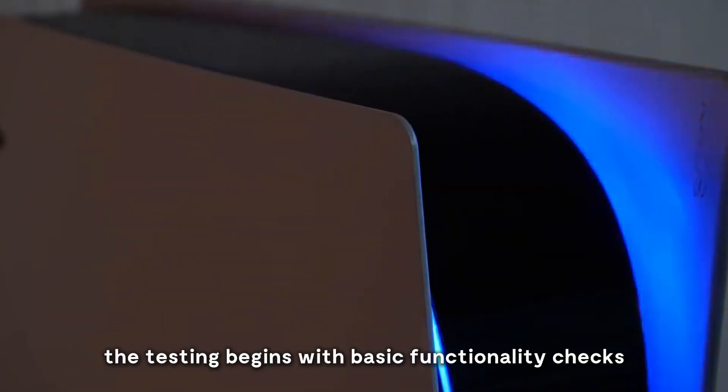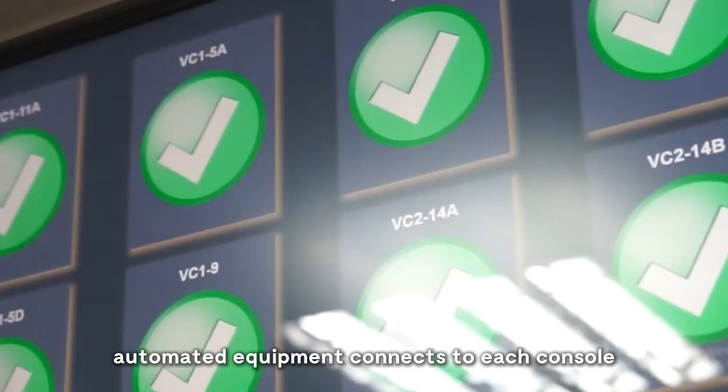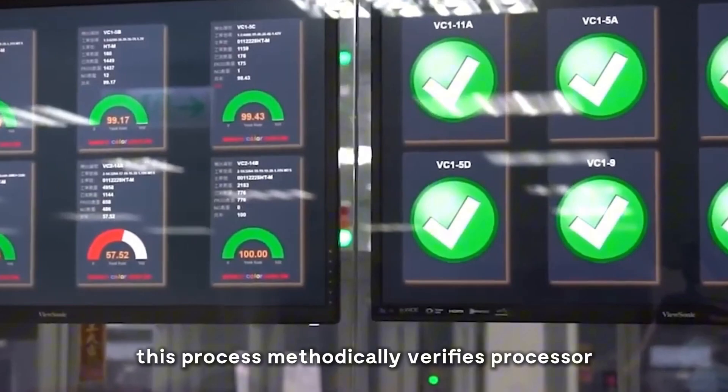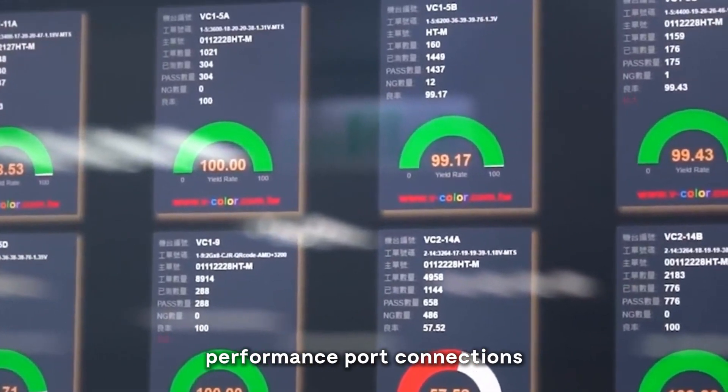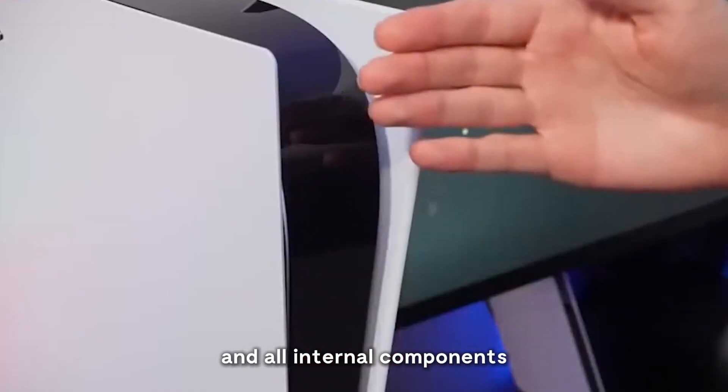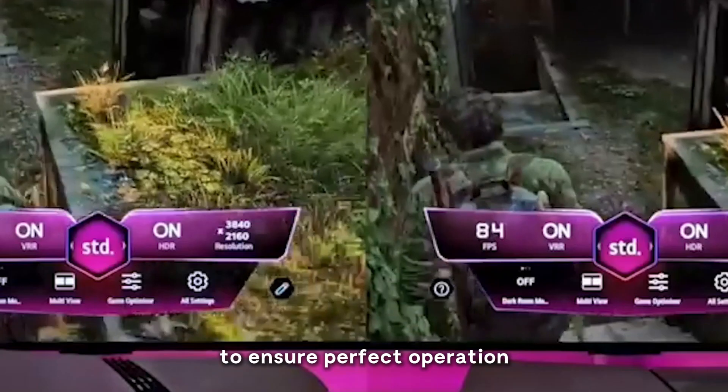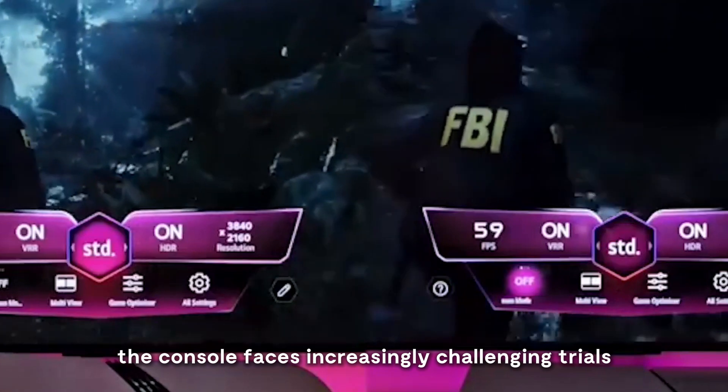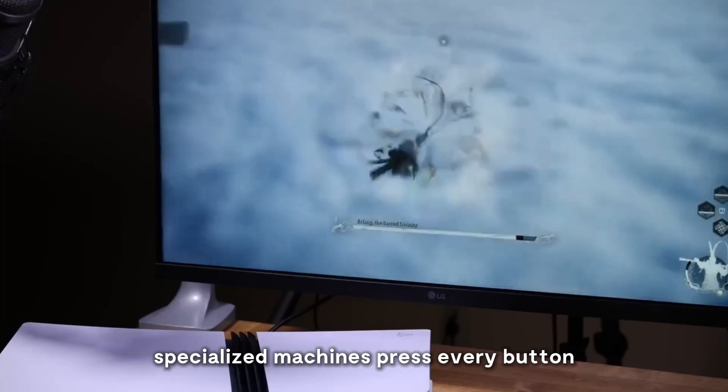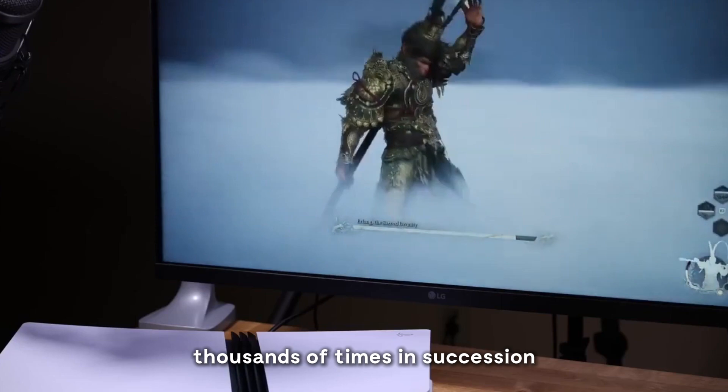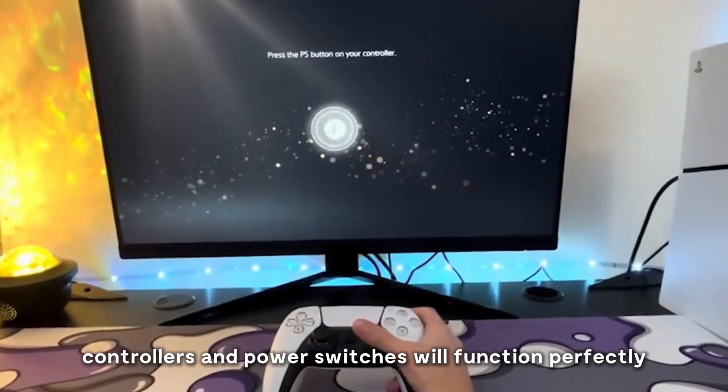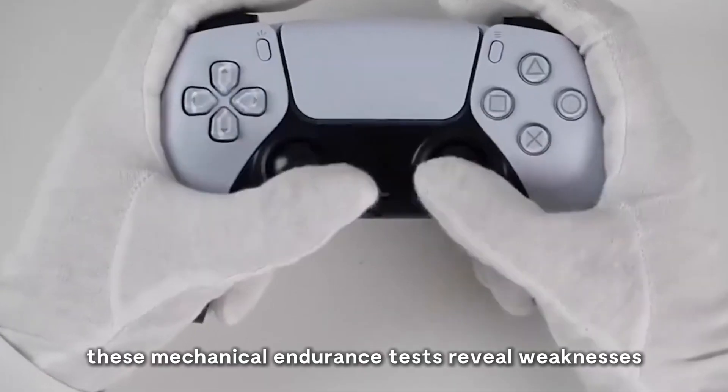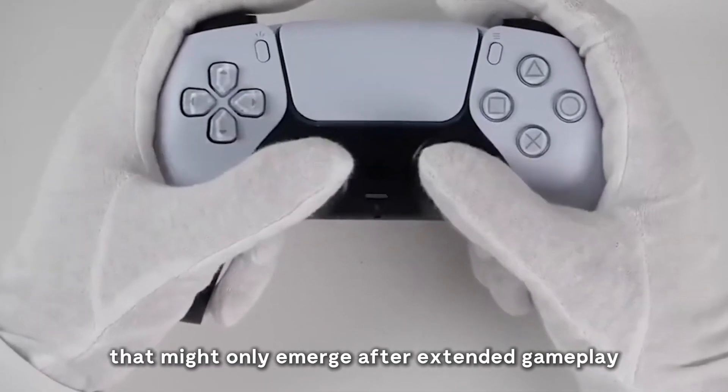The testing begins with basic functionality checks. Automated equipment connects to each console, running diagnostic software that examines every function. This process methodically verifies processor performance, port connections, and all internal components to ensure perfect operation. After passing basic tests, the console faces increasingly challenging trials. Specialized machines press every button thousands of times in succession, ensuring controllers and power switches will function perfectly after years of use. These mechanical endurance tests reveal weaknesses that might only emerge after extended gameplay.